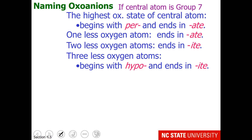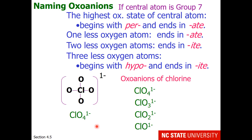Oxoanions based on group 7 — things like chlorine, bromine, or iodine with oxygens — have a much wider variety of oxidation states. The naming convention: the highest oxidation state (+7) gives the ion a 'per-' prefix and '-ate' ending. One less oxygen is '-ate', two less oxygens is '-ite', and three less oxygens is 'hypo-ite'. The '-ate' ending has a higher oxidation state than '-ite', and we need prefixes for the extremes: 'per-ate' for the highest and 'hypo-ite' for the lowest.